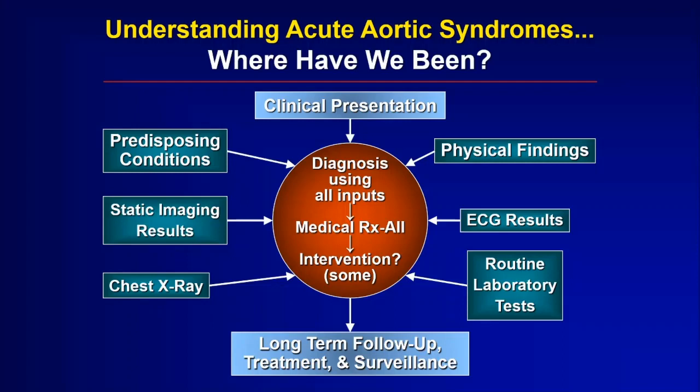Obviously, we use imaging and x-rays. The physical exam can be very helpful in evaluating a patient where we suspect aortic dissection. We use laboratory tests and an electrocardiogram too. All of these various inputs allow doctors to think about whether this symptom is likely to be an aortic dissection. And of course, anybody who has this condition gets medically managed — particularly blood pressure and heart rate — and then some of them need additional treatment.